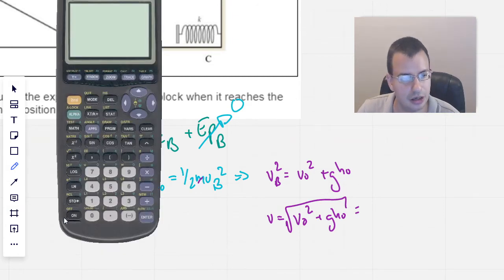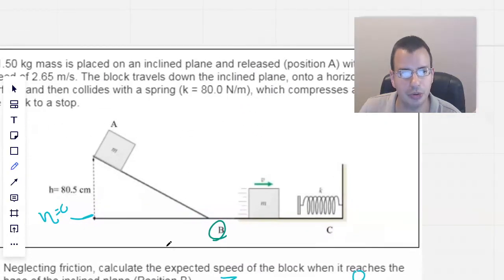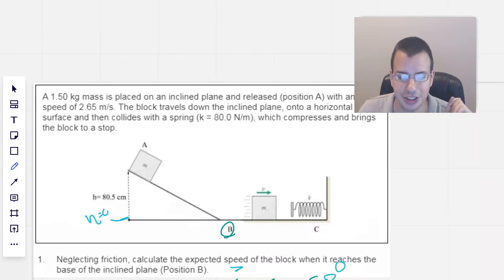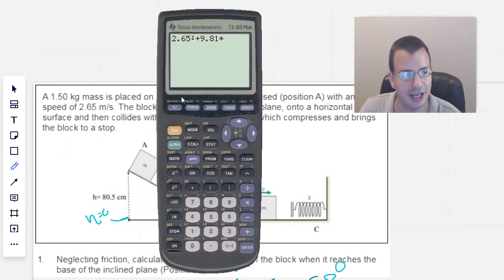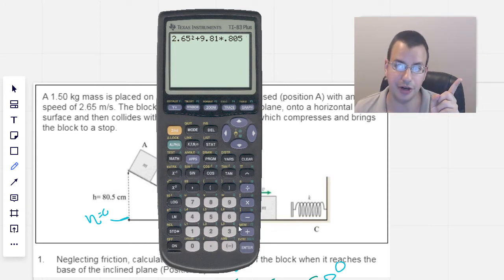You can do that with the calculator, on, clear. Our initial speed was 2.65, good catch. So we have 2.65 squared plus 9.81, which is gravity, times the height, which is 0.805, because it's in centimeters and we want to convert it to meters.